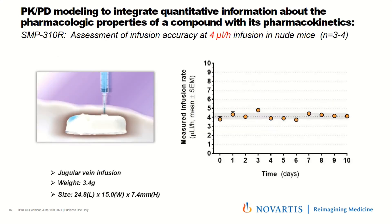To validate that the pump was delivering as programmed, we refilled the pump on a daily basis. The SMP310R in mice was set at 4 µL/hour. By measuring how much needed to be refilled each day, we calculated the actual compound delivered per hour. The results showed the pump was very consistent over 10 days of daily refilling — the observed delivery closely matched the programmed 4 µL/hour, confirming the pump was performing exactly as expected.